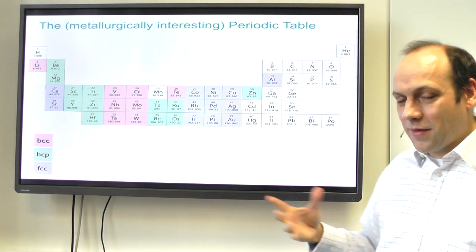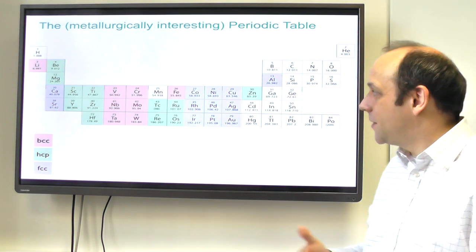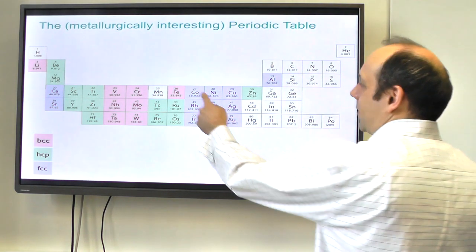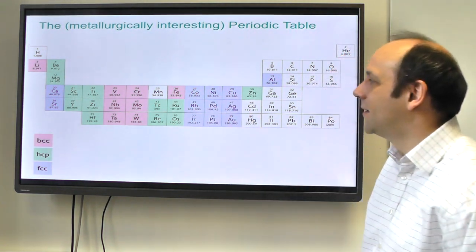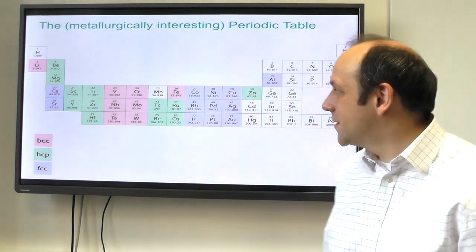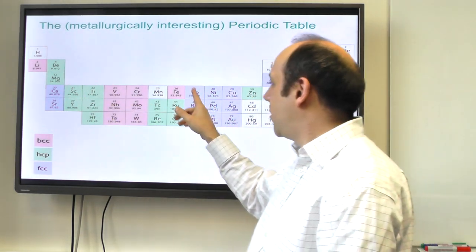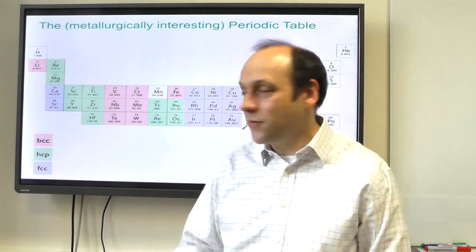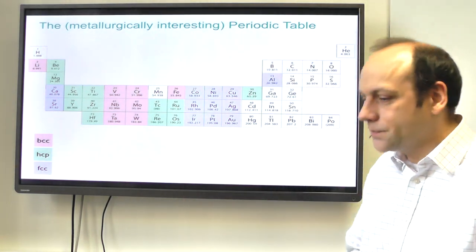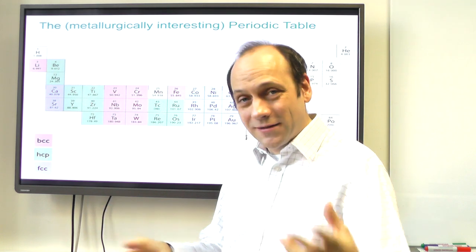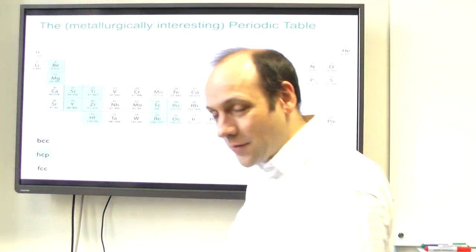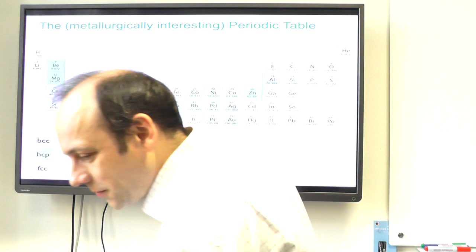Immediately, if we say things want to be the same crystal structure, then these elements would dissolve each other very nicely. Titanium and zirconium would dissolve each other very nicely. But cobalt and chromium, or nickel and chromium, might have problems. That's the first insight, and we'll look at some phase diagrams to see if this is true.